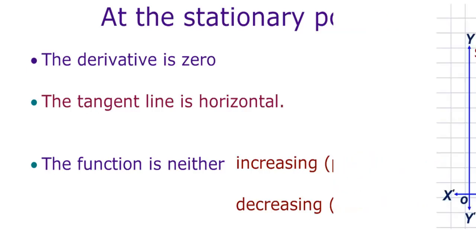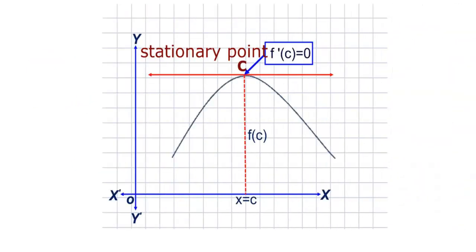Consider the following graph of a function. Observe that in this graph, at x equal to c, the function is neither increasing nor decreasing. We also see that the tangent is horizontal and f'(c) is equal to 0. Therefore, we say this point c is a stationary point.